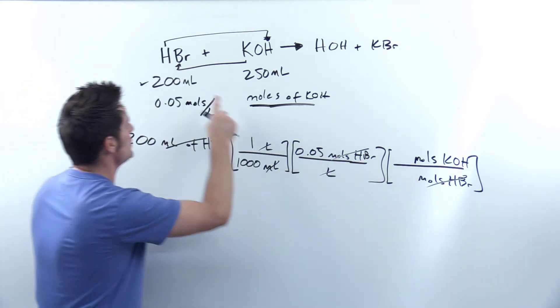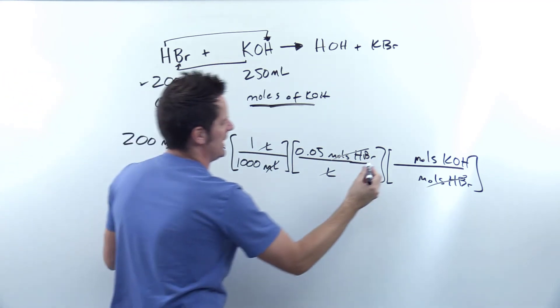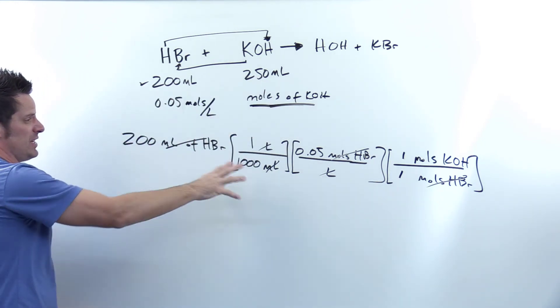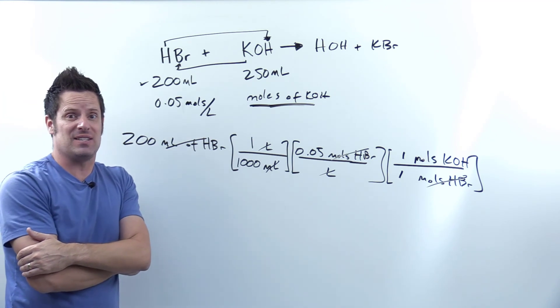Over here, what's the mole to mole ratio of HBr to KOH? Yeah, there's an implied one here and implied one there. So they just react one to one. You plug and chug all of that in your calculator, you get the final answer of moles of KOH, and that hopefully makes sense.